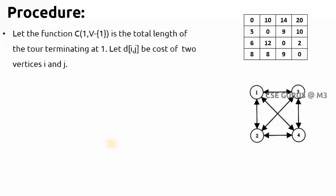What is the procedure? We are taking a cost function C(1, V-{1}), that is the total length of the tour terminating at 1. Let d(i,j) be the cost of two vertices. We will see that in our example explanation.